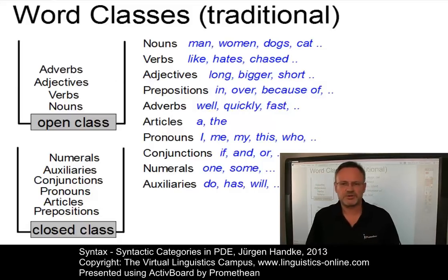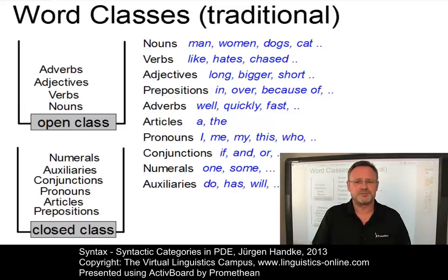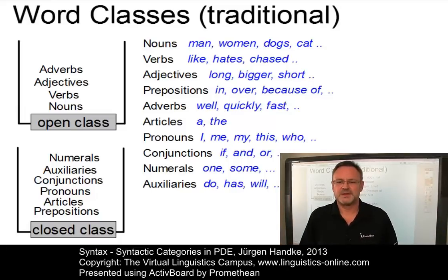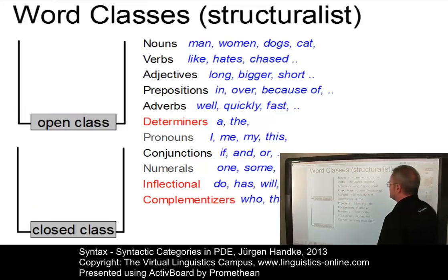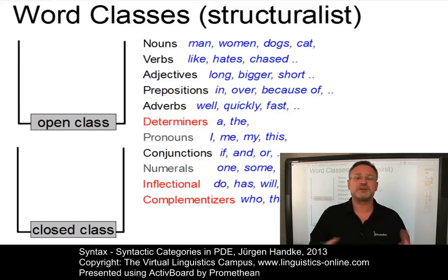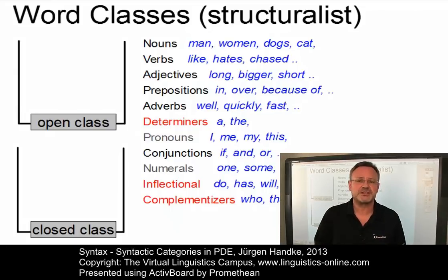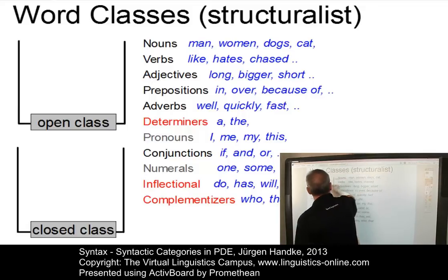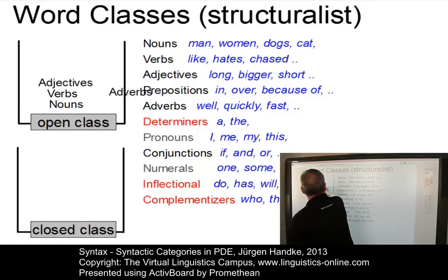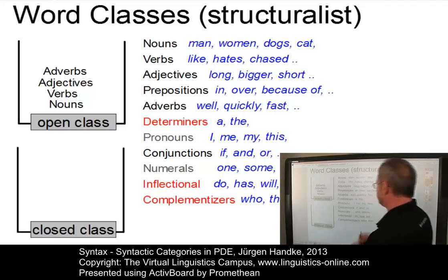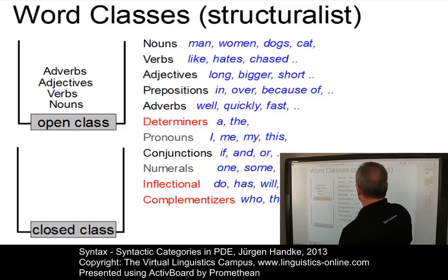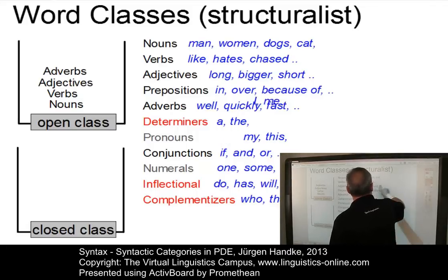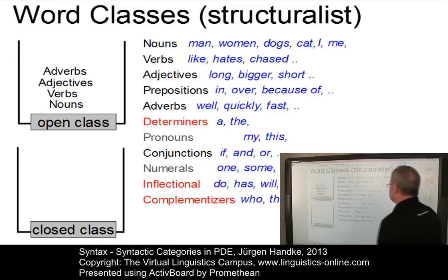This is the traditional approach, which most of you are probably familiar with from school. The structuralist view goes back to American structuralism and defines word classes in a more general way, allowing more general approaches towards syntactic categories. It basically defines the same open class elements — nouns, verbs, adjectives, and adverbs — but some classes were redefined. For example, nouns now subsume also the class of personal pronouns, because they can occur in the same slot.